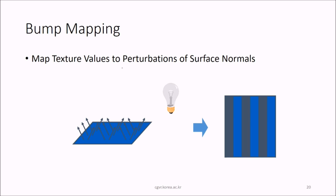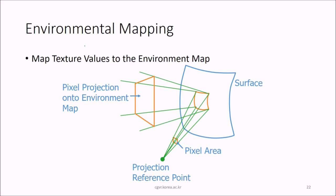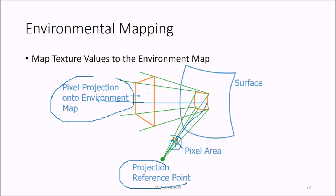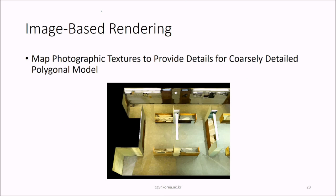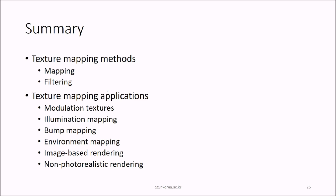Bump mapping — we map texture values to perturbations, meaning disturbances of surface normals. Then environmental mapping — we map texture values to the environment map. This involves the pixel projection onto the environment map, the projection reference point, the pixel area, and the surface. This is called environmental mapping. Finally, image-based rendering — we map photographic textures to provide details of a coarsely detailed polygon model. This is non-photorealistic rendering.